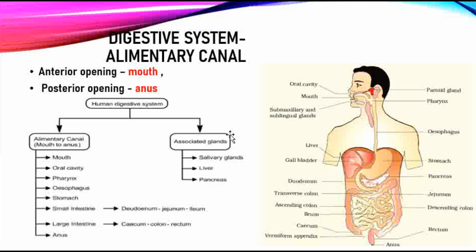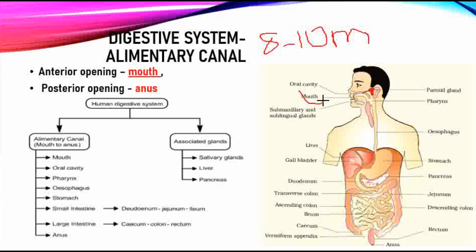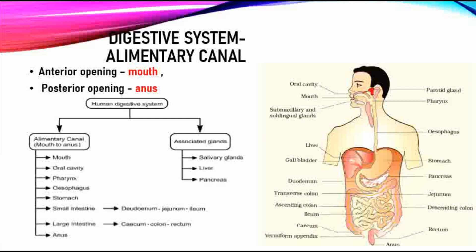Now let's look at the digestive system. We have the alimentary canal, which is a long tube. The alimentary canal extends from the mouth to the anus and is 8 to 10 meters long. So the mouth to anus constitutes the alimentary canal in the human digestive system.